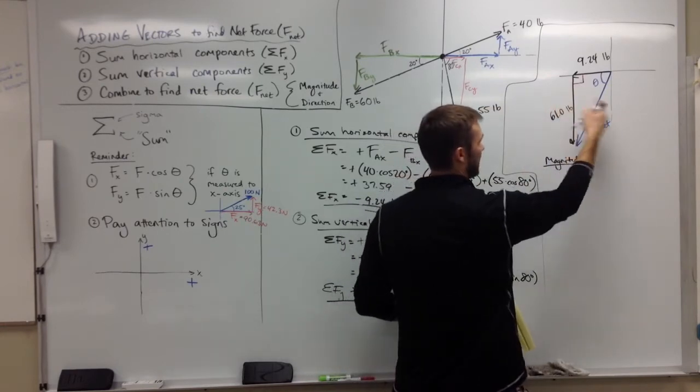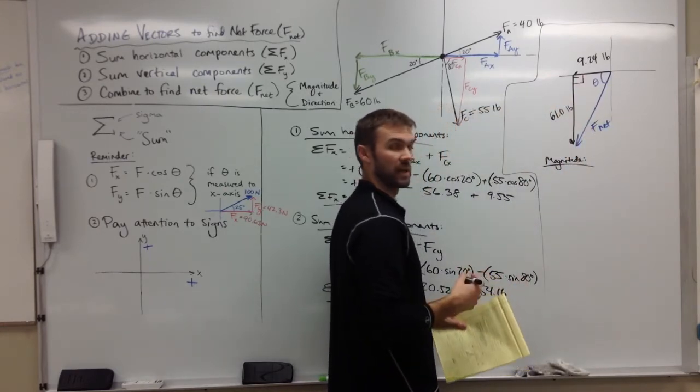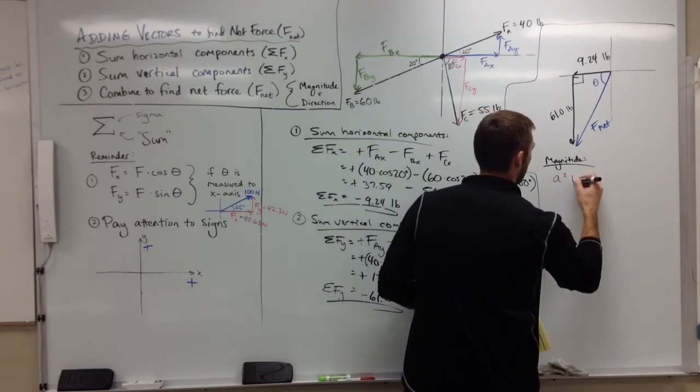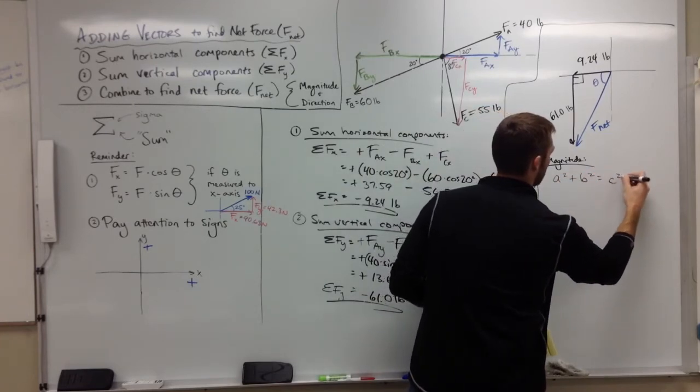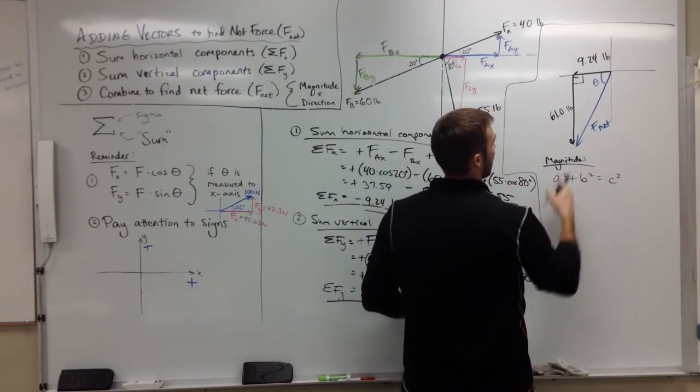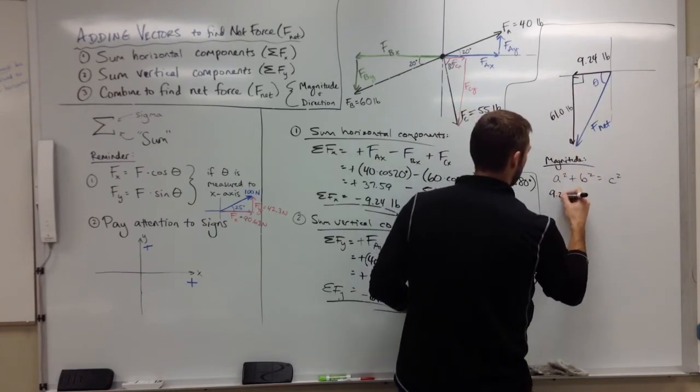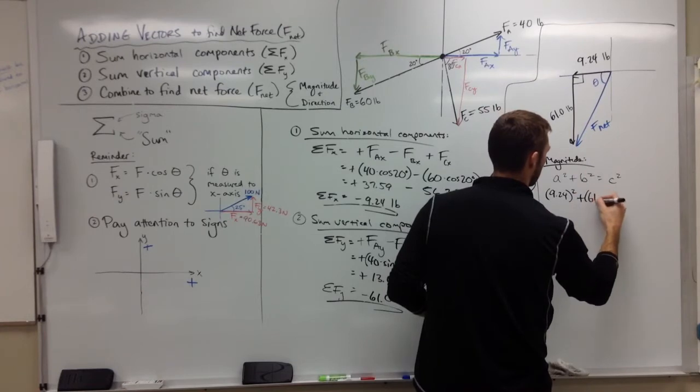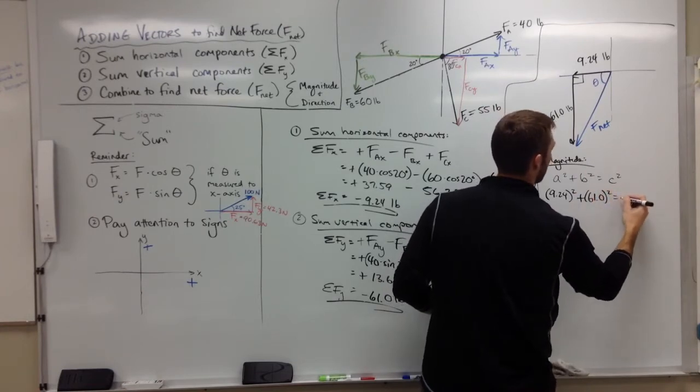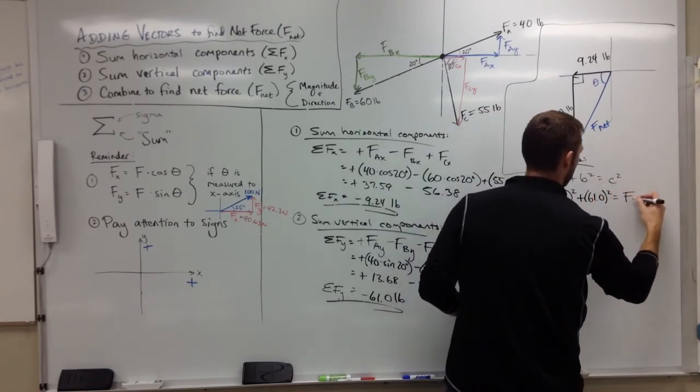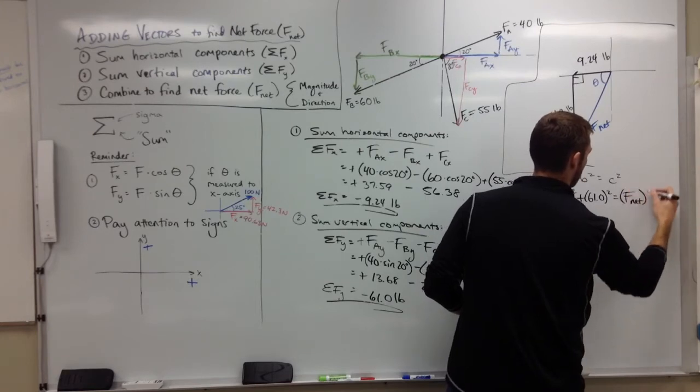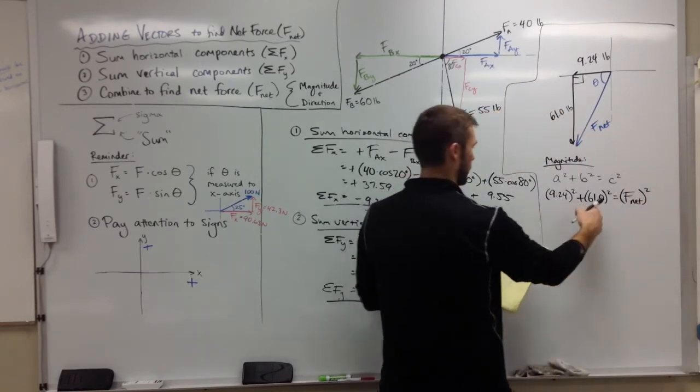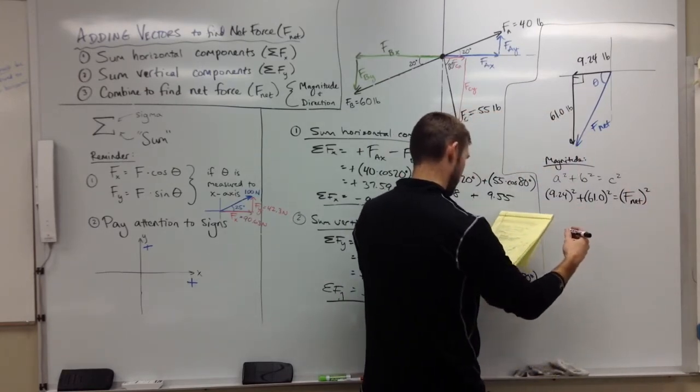If I know the two legs, how do I find the hypotenuse? The Pythagorean theorem sounds like a great way. a² + b² = c². a is going to be 9.24, b is 61.0, and my c is my net force. 9.24 squared plus 61 squared gives me 3806.38.